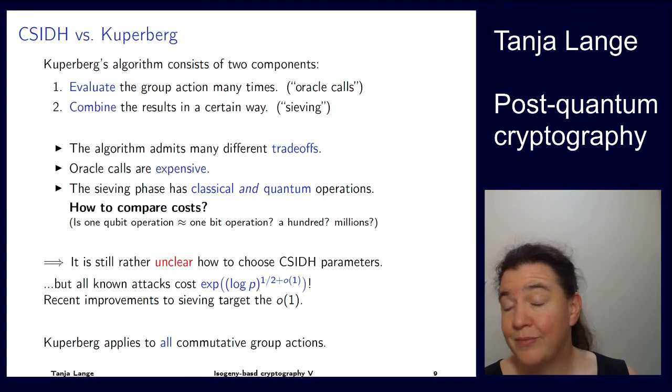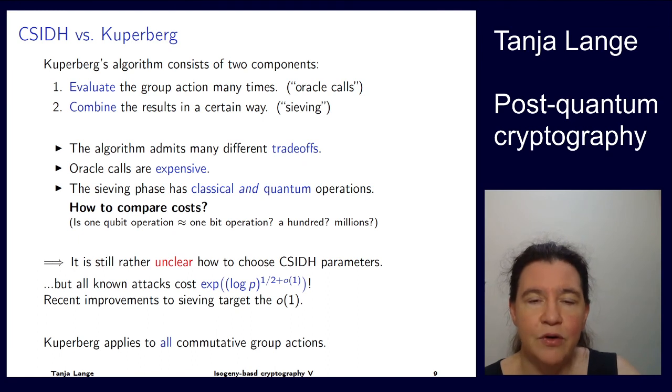As a word of warning, whenever you have a commutative group action—because you want a commutative group action, it's great for functionality—that means you also definitely have a Kuperberg attack that just comes with the package.